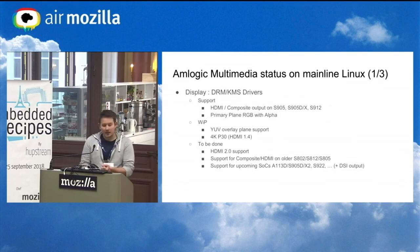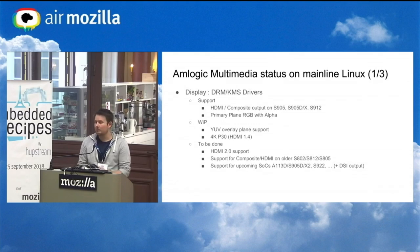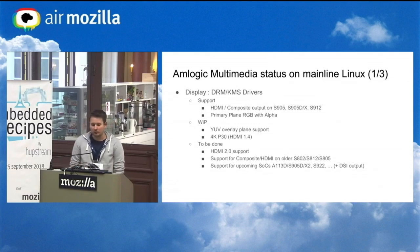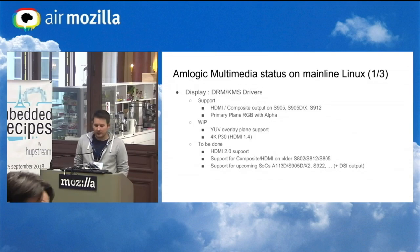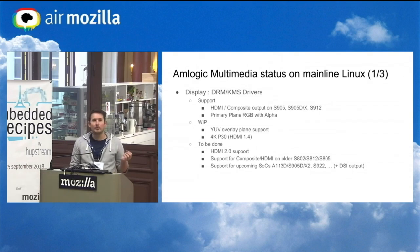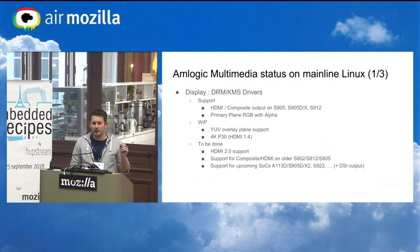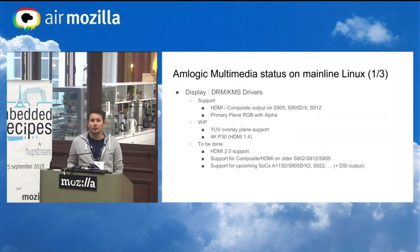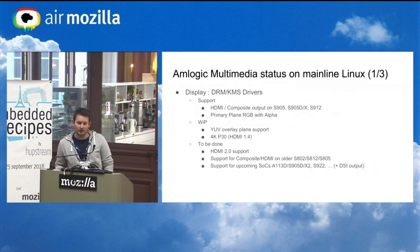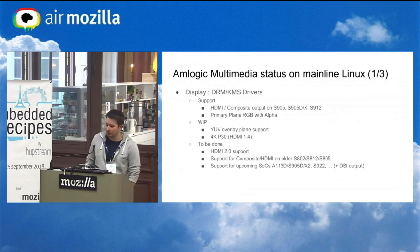On the display side, we have a DRM KMS driver for most of the newer Amlogic SoCs. We have HDMI and composite output support and a primary RGB plane with alpha support. In progress, we have the 4K HDMI 1.4 mode as well as YUV overlay plane support. We still don't have support for HDMI 2.0, HDR, 10-bit color output and all that great stuff, but we really want to get that as well.